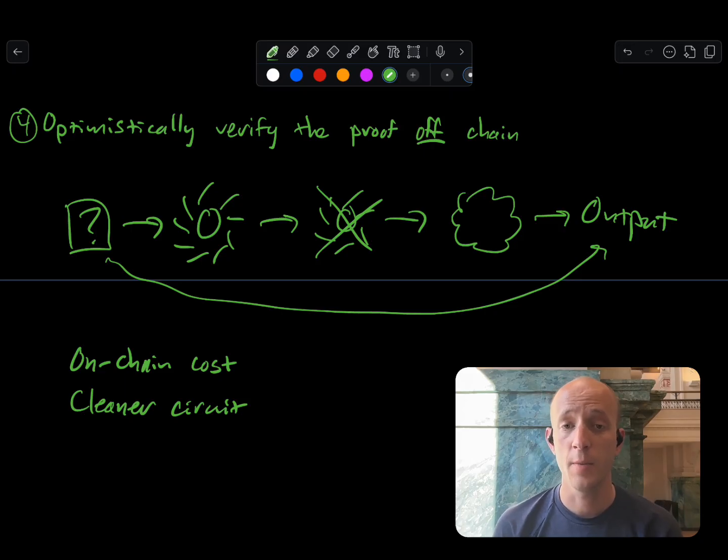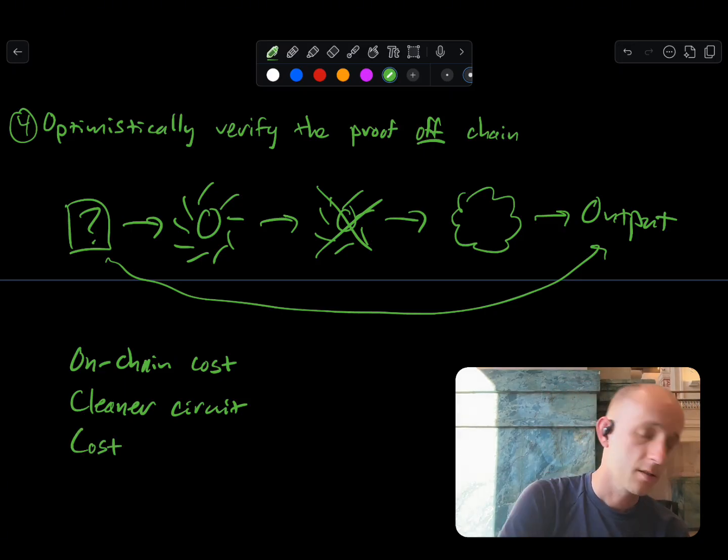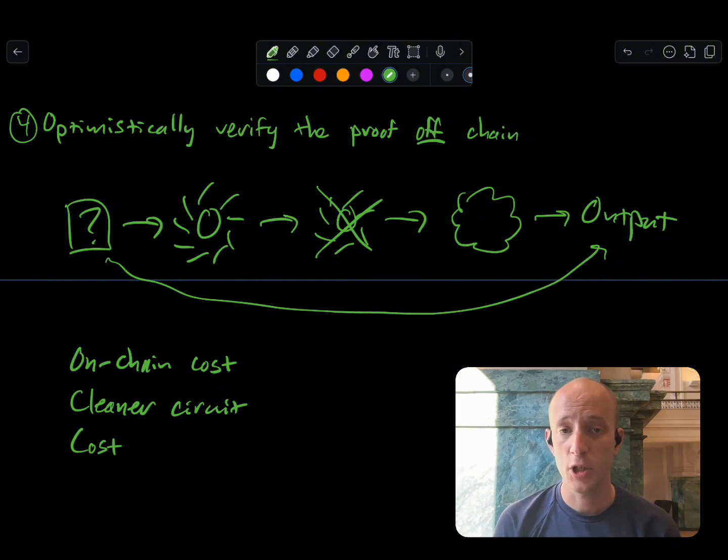Another issue that came up with the BitVM1 and BitVM2 designs is cost. When you have to have more data on-chain and more complex transaction graphs in order to execute computation, that implies more cost. If we can bring those things down, like we can with Glock, that means lower costs across the board.